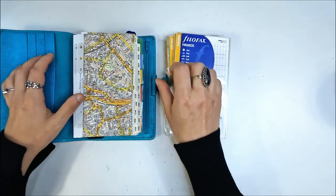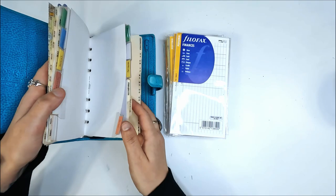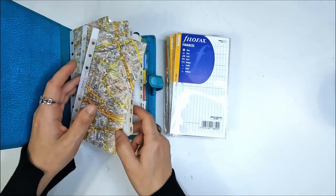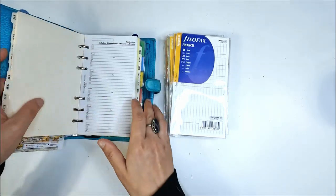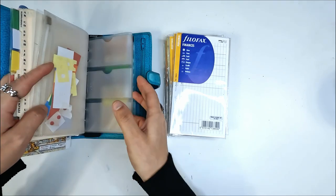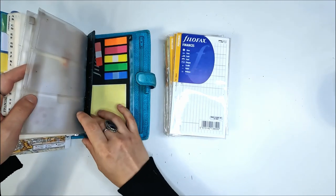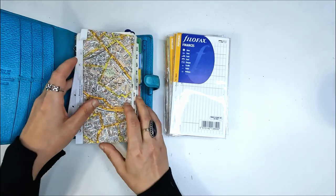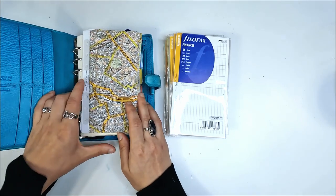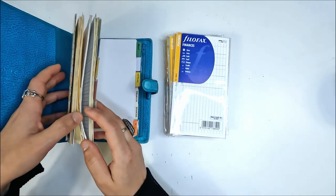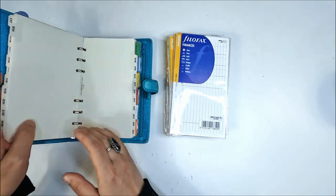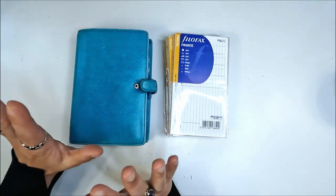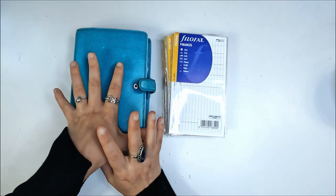It is completely full with dividers, other inserts, maps, little plastic wallets, card slots. It's got the ruler. It's absolutely chocka, so I am very excited with this little haul and I will take you through what I got now. So we'll start off with the sealed inserts.